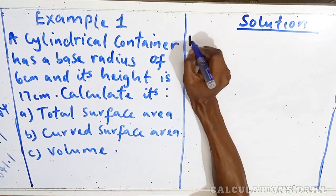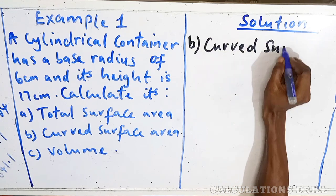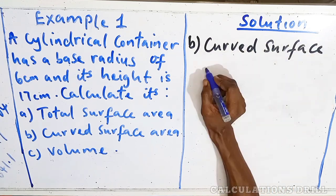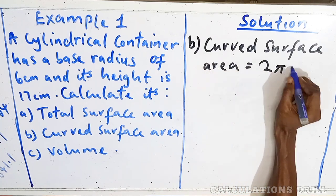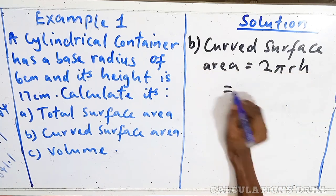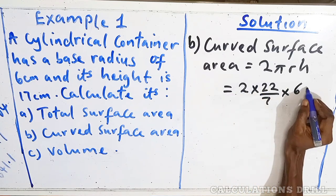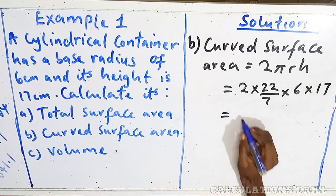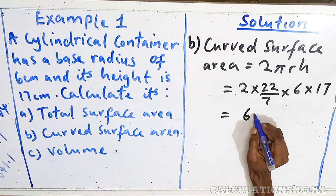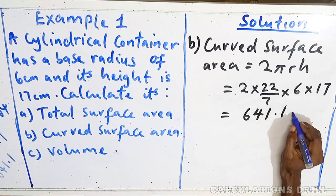Then, the next thing we are going to calculate for is the curved surface area. Curved surface area. As we know, the formula is 2πrh. The same radius, which is 6, and our height is 17. So, we impute the values and that will give us 641.1 cm².